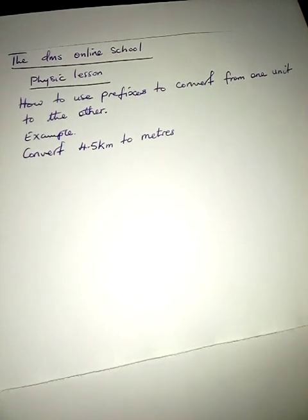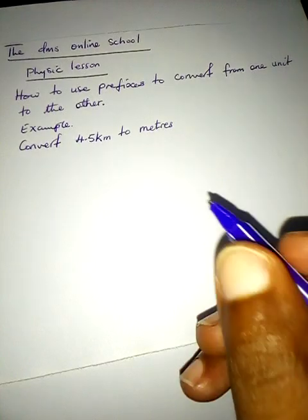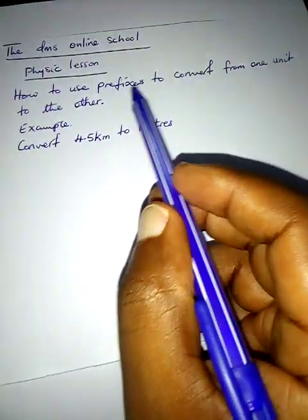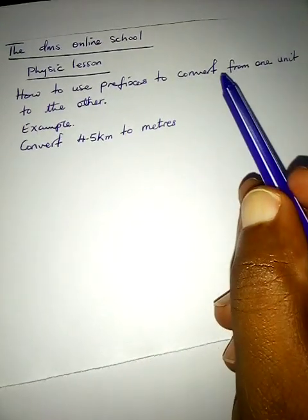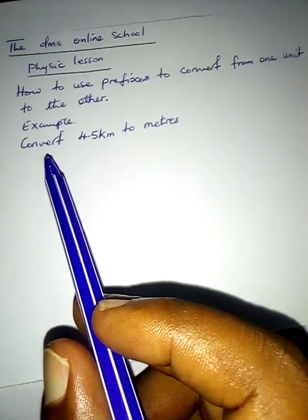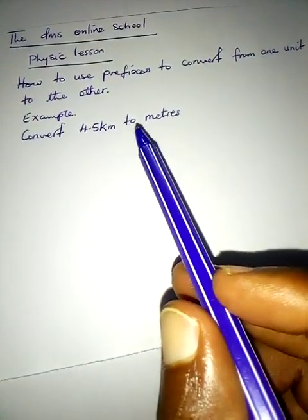Okay, welcome to the DMS online school. In today's video, I'm going to show you how you can use prefixes to convert from one unit to the other. For example, we have: convert 4.5 kilometers